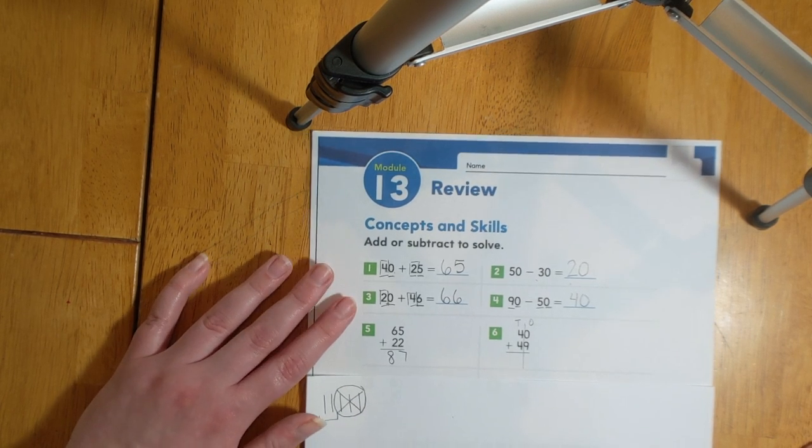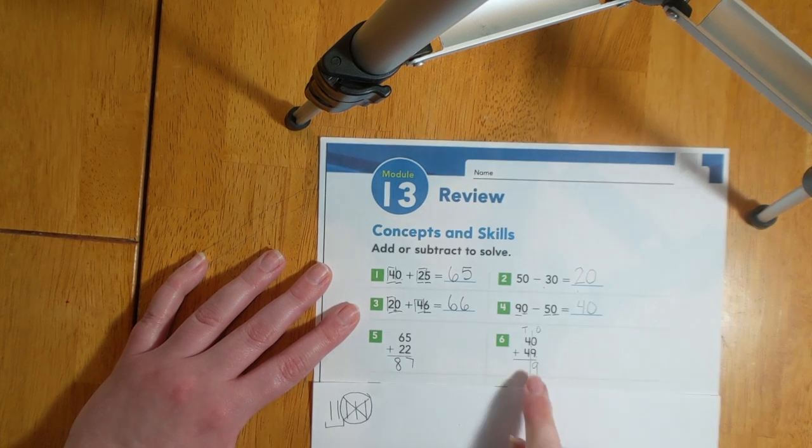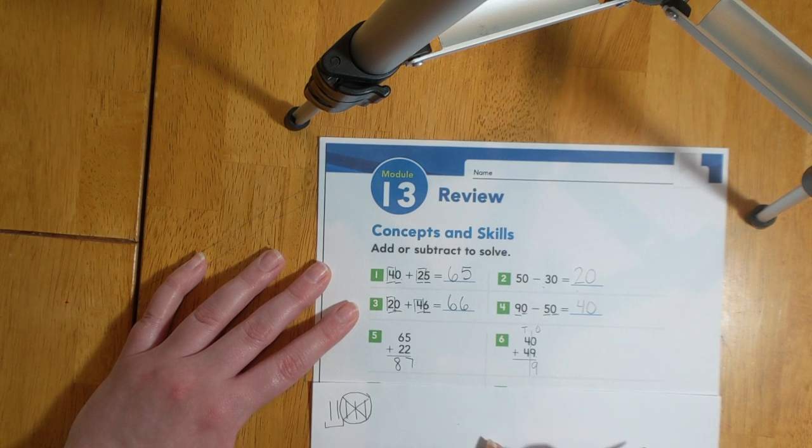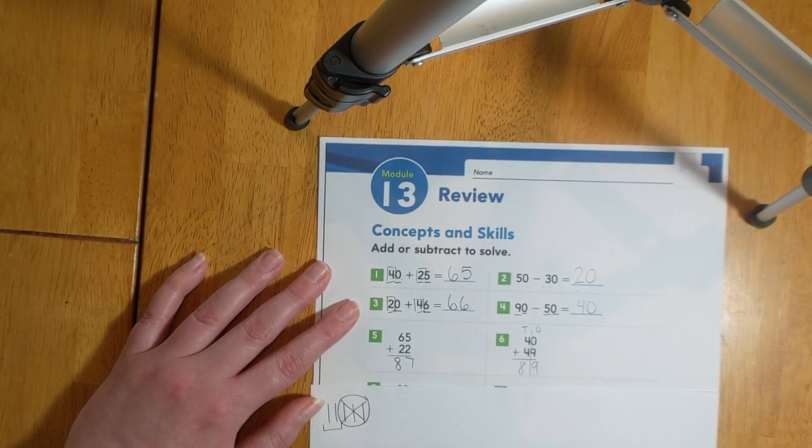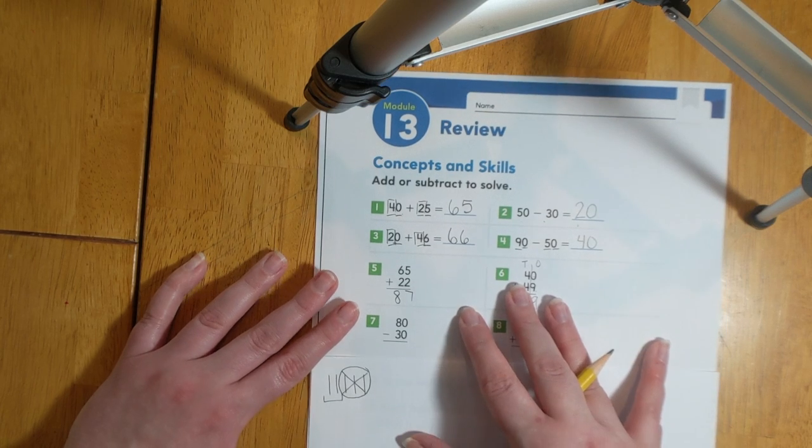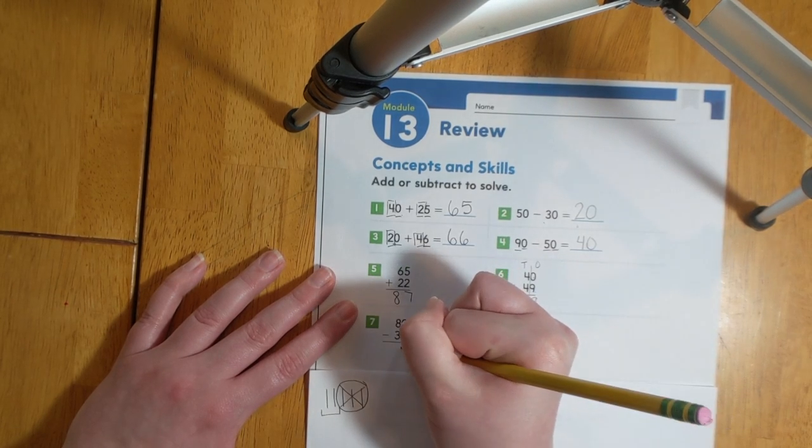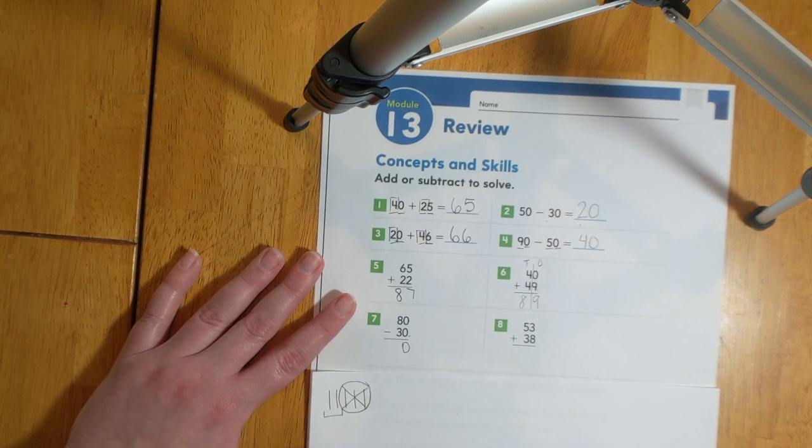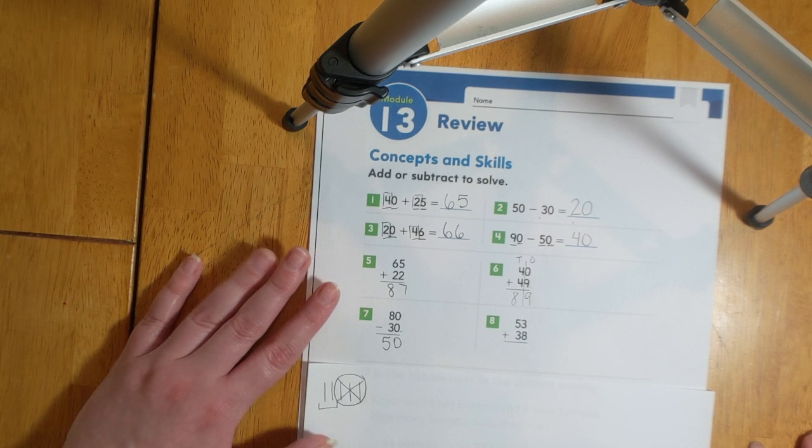Number six is 40 plus 49. We know that zero plus nine equals nine. If the ones add up to nine everything is fine. We don't have to take any numbers next door. Four plus four equals eight. So 40 plus 49 equals 89. Number seven says 80 minus 30. We know that zero minus zero equals zero. We know that eight minus three equals five. So 80 minus 30 equals 50.